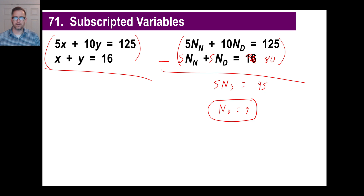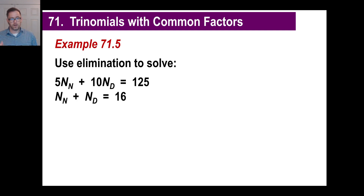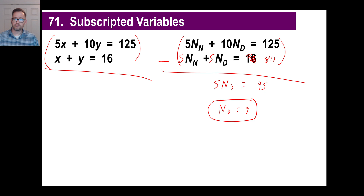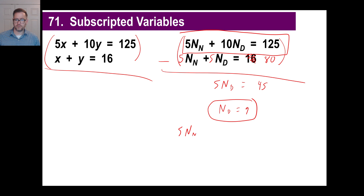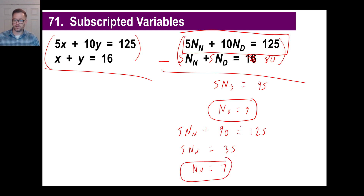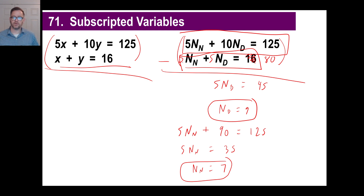Let's finish that problem. Going back: 5 N_n plus 10 times N_d (which is 9) equals 125. So 5 N_n plus 90 equals 125. Then 5 N_n equals 125 minus 90, which is 35. N_n equals 35 divided by 5, which is 7. You can check: N_n is 7 and N_d is 9, and they add up to 16.